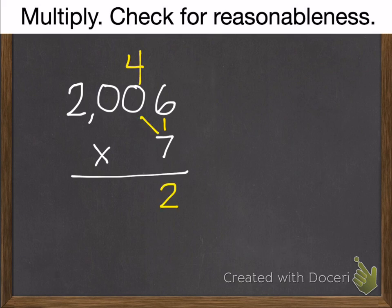Multiply the tens. 7 times 0 is 0. 0 plus 4 is 4. Multiply the hundreds. 7 times 0 is 0. Multiply the thousands. 7 times 2 is 14.